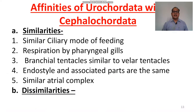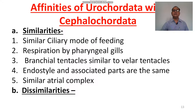Affinities of Urochordata with Cephalochordata. Similarities: similar ciliary mode of feeding; respiration by gills; branchial tentacles similar to the oral tentacles. Endostyle and associated parts are the same, and the atrial complex is similar.